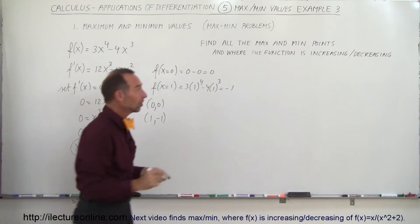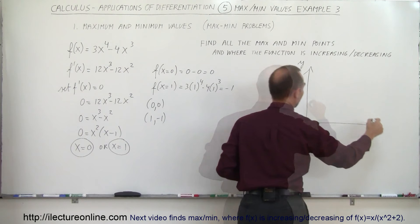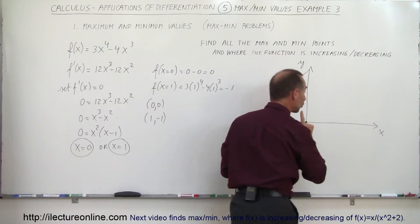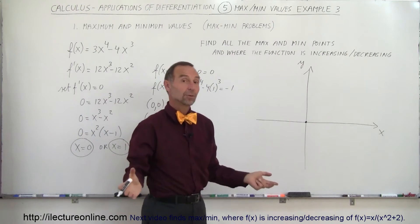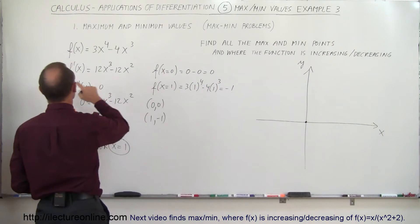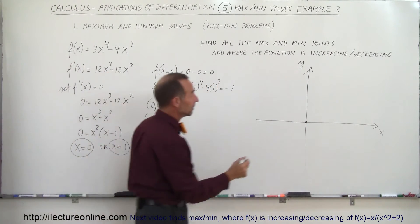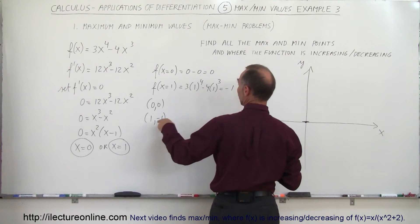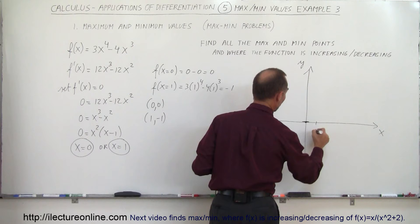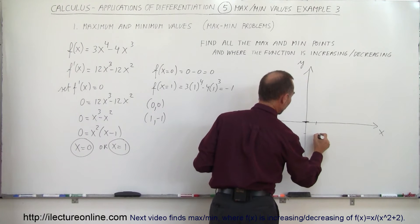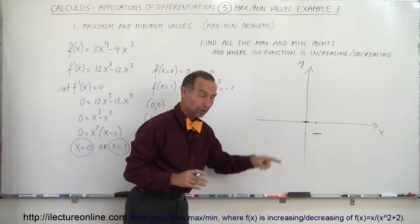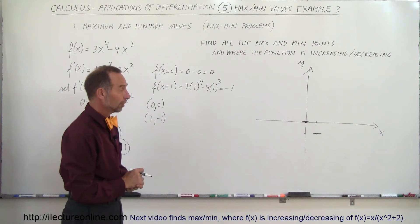Let's put those on the graph and see what it looks like. The first critical point is (0, 0) — we know that the slope there must be zero, because that's where the derivative is equal to zero. The next point is (1, -1): when x equals 1, y equals negative one. We know the slope there is zero as well. At those two critical points, the slope is equal to zero.